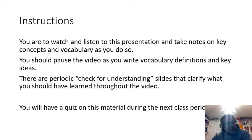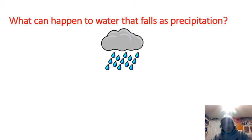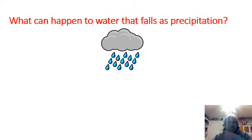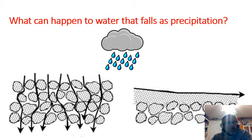Make sure you have that in your notebook. We're talking about the water cycle. We've talked a lot about what water does going up in the sky and forming clouds, then we get precipitation and it falls. When precipitation falls and hits the ground, it can only do one of two things: water that hits the ground either goes into the ground or it moves across the surface.